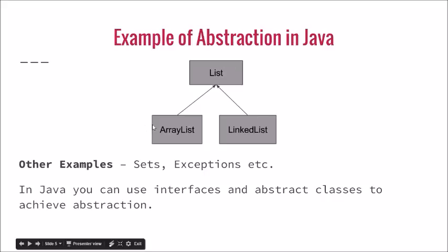But ArrayList and LinkedList could have some methods which will not be there in the List but specific to these classes. So this is the abstraction of ArrayList and LinkedList. Some other examples which you can go and look at are Sets, Exceptions, and there are many more. I think Java or any object-oriented language is full of such examples.